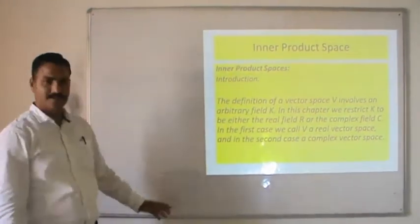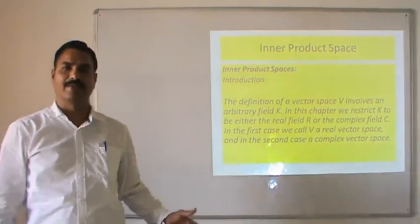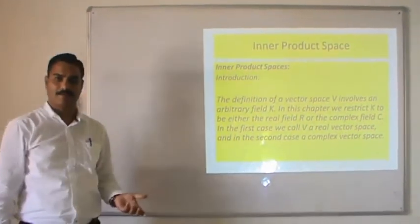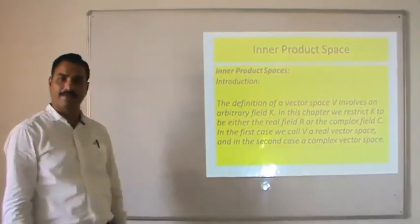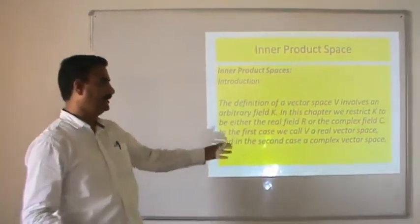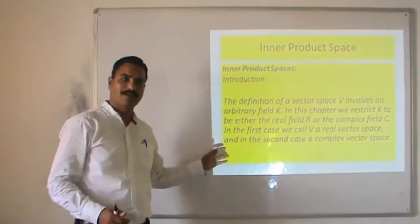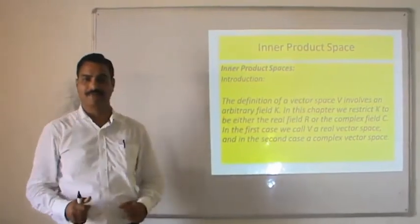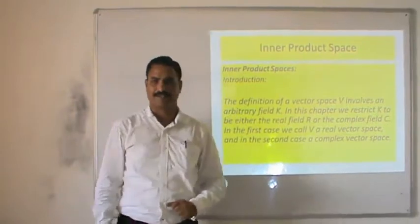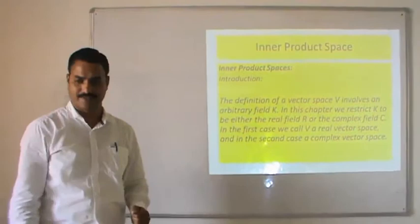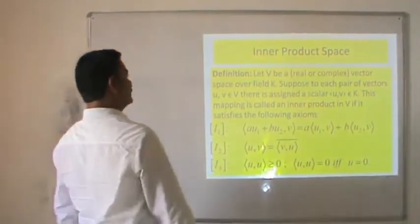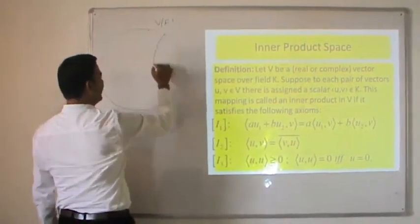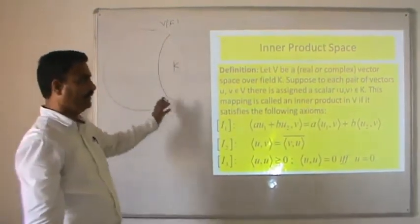Inner product spaces — introduction. The definition of vector space V involves an arbitrary field. In this chapter we restrict our field to be either a real field or a complex field. When the vector space is defined over a real field, we call V a real vector space; and when defined over a complex field, such vector space is called a complex vector space.